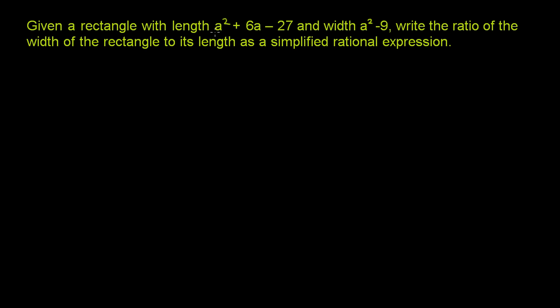Given a rectangle with length a² + 6a - 27 and width a² - 9, write the ratio of the width of the rectangle to its length as a simplified rational expression.